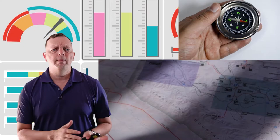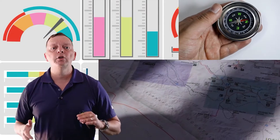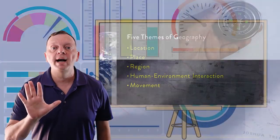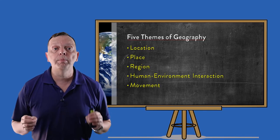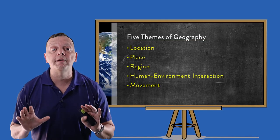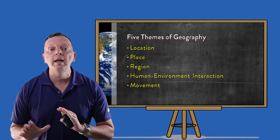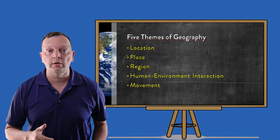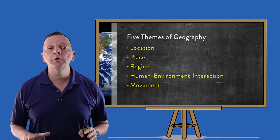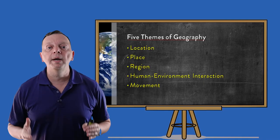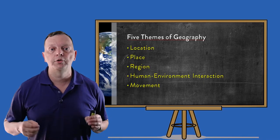Now in order for geographers to study these elements of the world, they can use several different tools. These can include maps, charts, data, as well as something known as the five themes of geography. These five themes — location, place, region, movement, and human-environment interaction — describe how geography looks at the world. In this lesson, they also provide a useful way to introduce some of the basic concepts of geography.